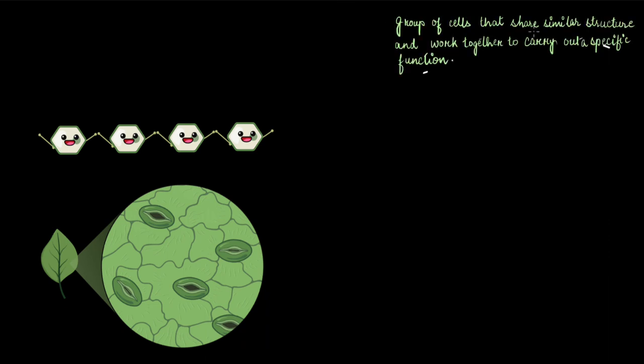The definition of tissues goes like this: these are groups of cells that share similar structure and work together to carry out a specific function. We have touched upon this concept already in our previous videos when we discussed animal tissues. In this video we will talk specifically about tissues of the plant kingdom.